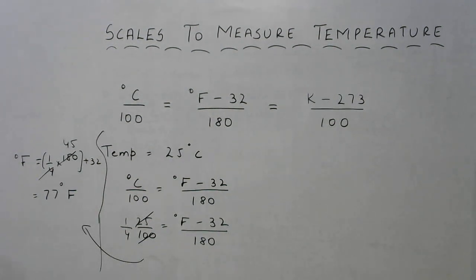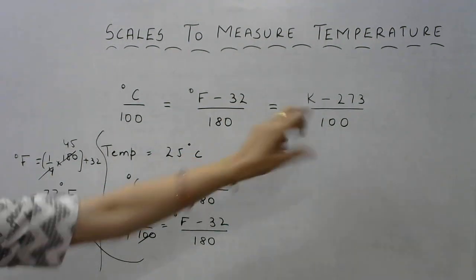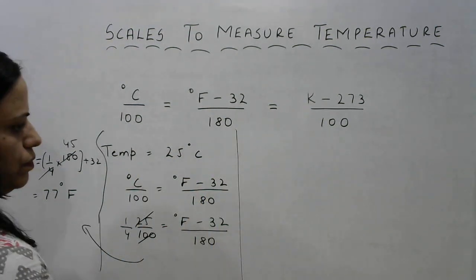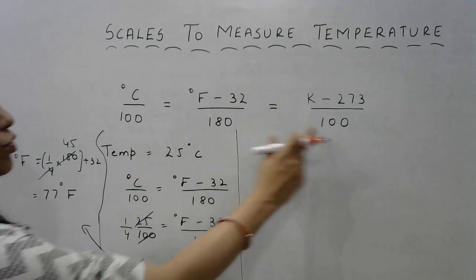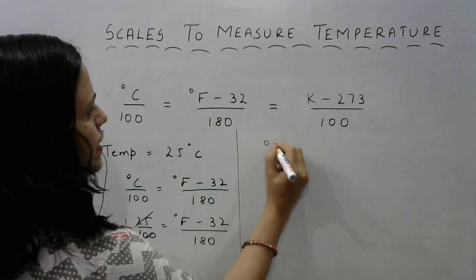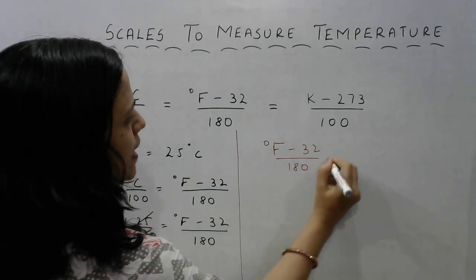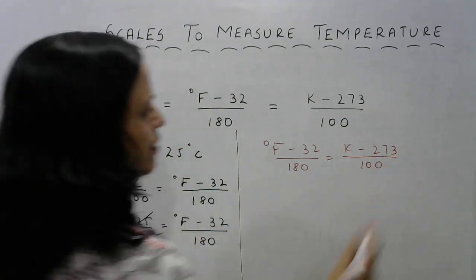Now let us convert this temperature in Fahrenheit to Kelvin. So we will be converting 77 degrees Fahrenheit to Kelvin. So this marks the boundary. How do we go ahead with this? Now we will be equating these two formulas here. That means degrees Fahrenheit minus 32 upon 180 is equal to Kelvin minus 273 upon 100.